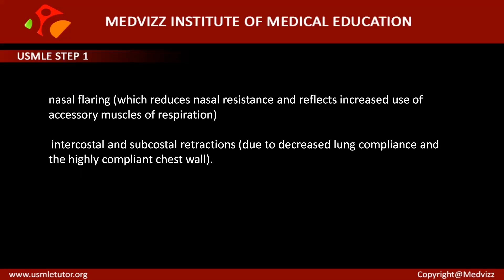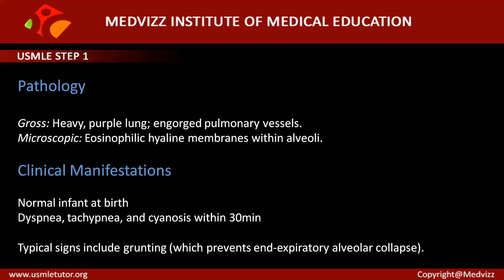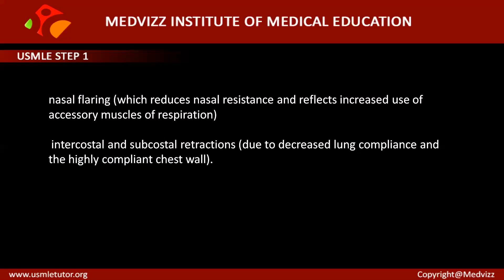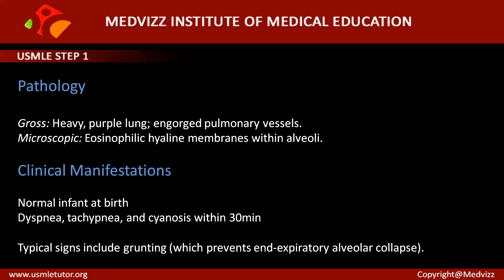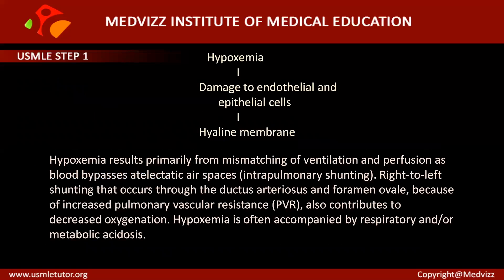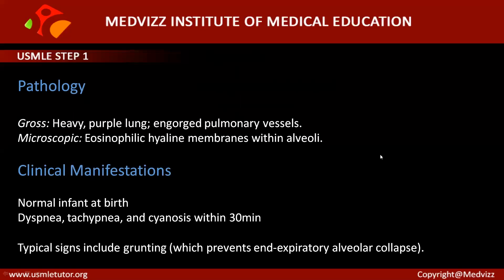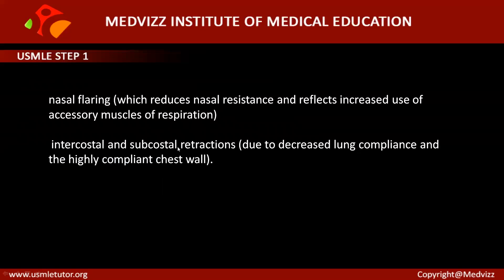Nasal flaring reduces nasal resistance and reflects increased use of accessory muscles of respiration. It is another important protective phenomenon along with grunting. There will be intercostal and subcostal retractions mainly because of decreased lung compliance and the highly compliant chest wall.